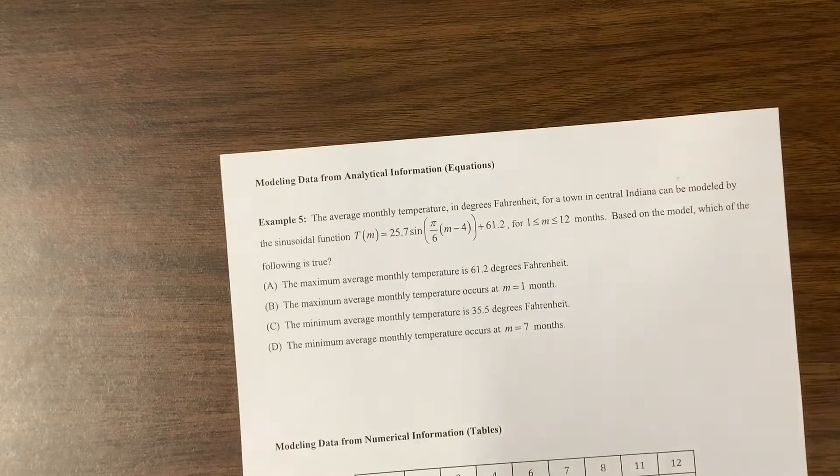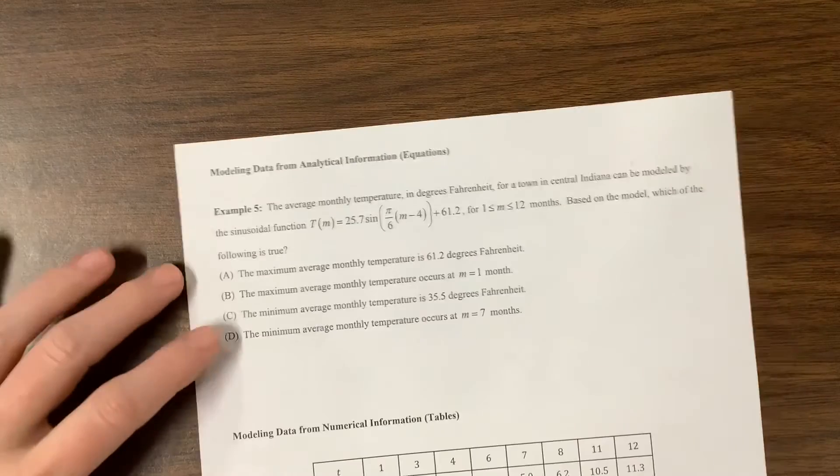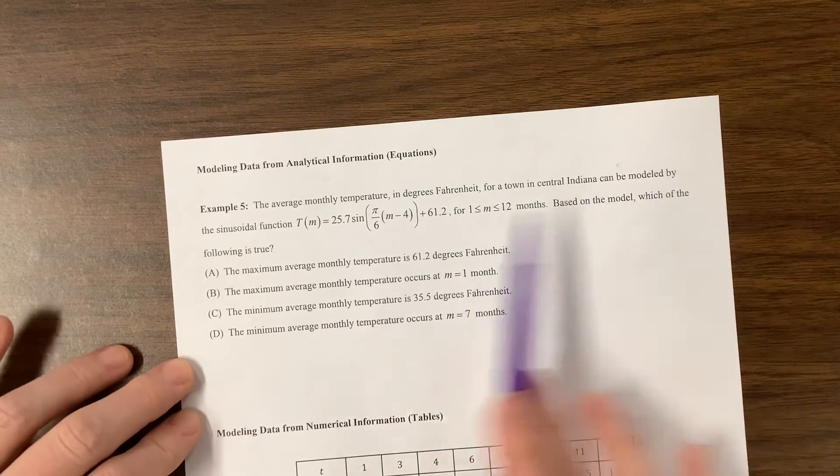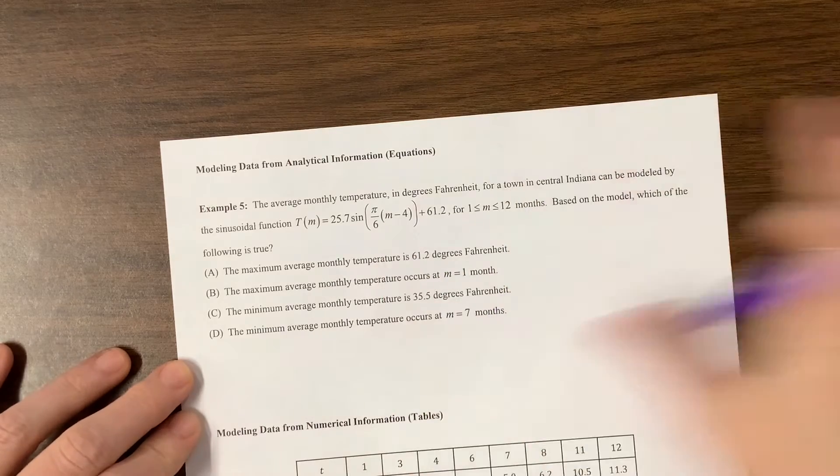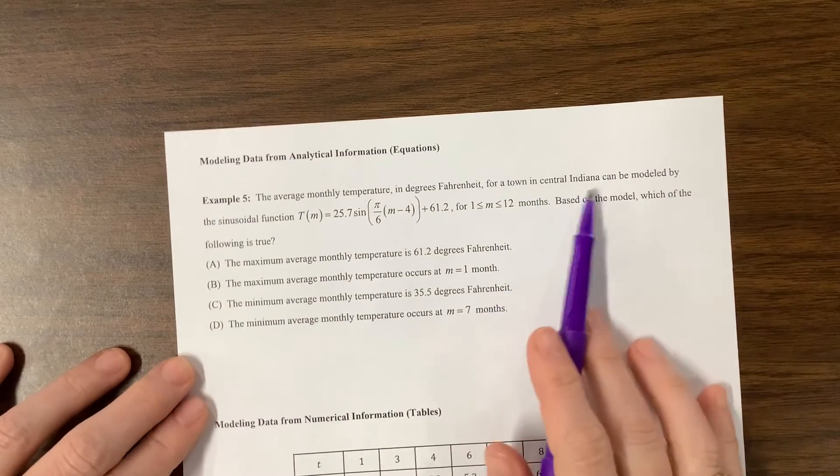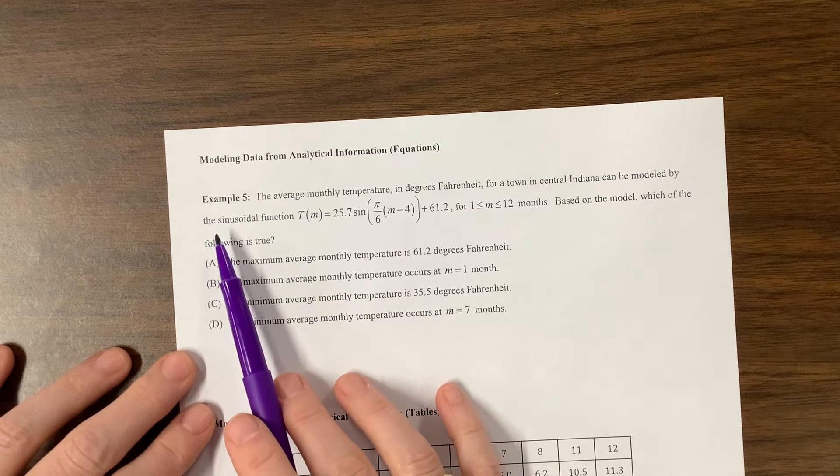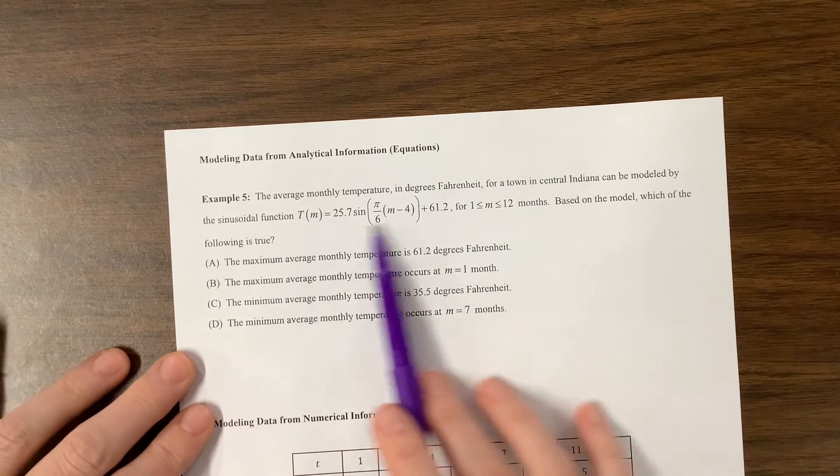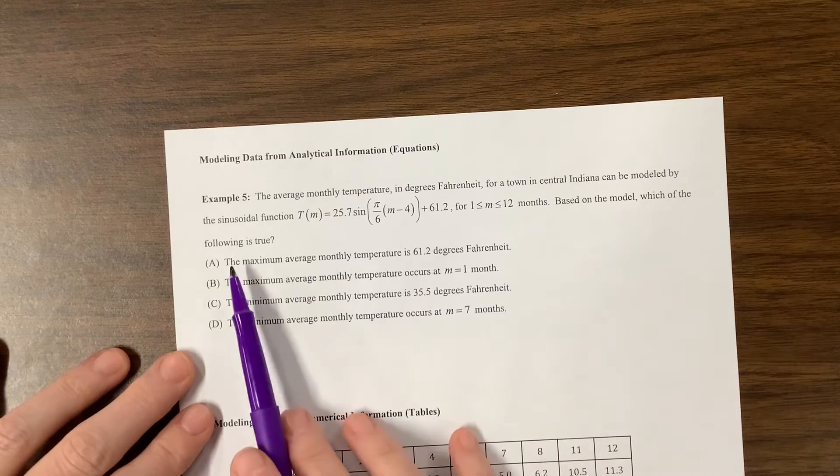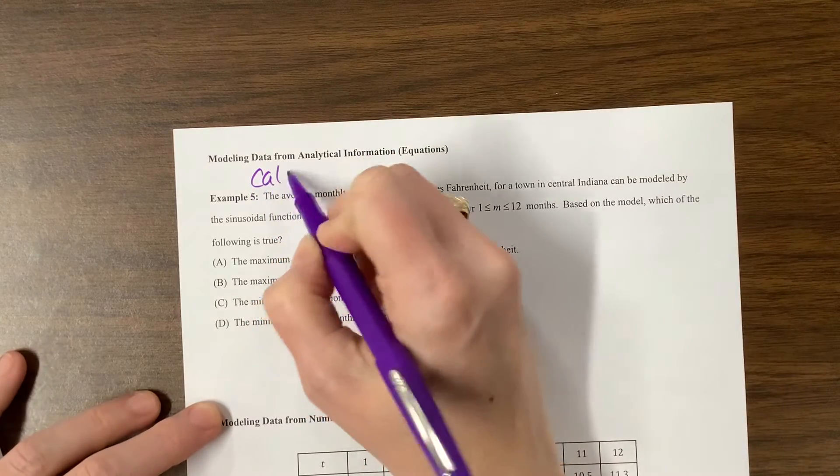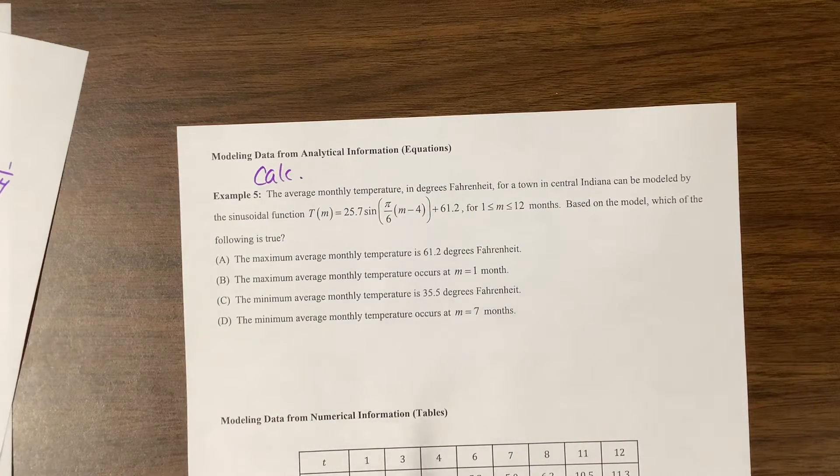I think I can finish this before we call it good. The average monthly temperature in degrees Fahrenheit for a town in central Indiana. I wrote a problem where it happened in Patagonia. I thought it was funny. It can be modeled by this equation. This is a calculator-friendly problem. Let's see if I can find my calculator.